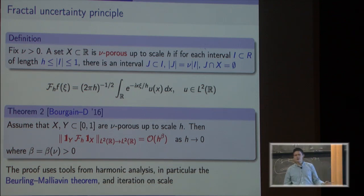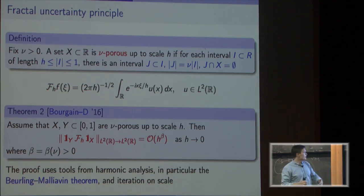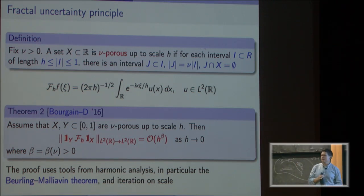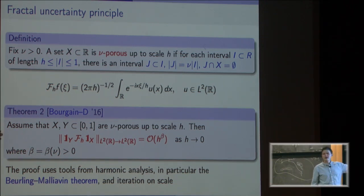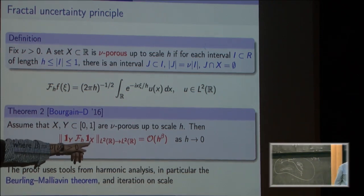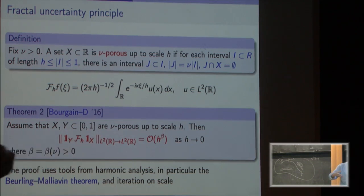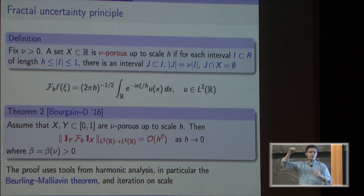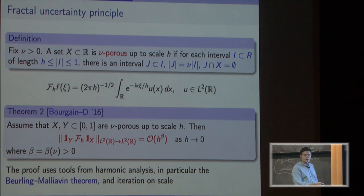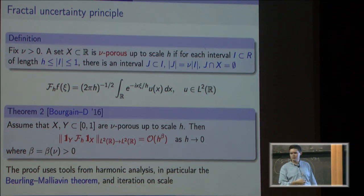That's the statement needed to prove the theorem. If you stare at it, there isn't much microlocal analysis and certainly not much quantum chaos. Indeed, the proof has nothing to do with what was discussed before — it's a harmonic analysis statement. It says: if the Fourier transform of a function has support in a porous set, then when you restrict to another porous set in position, you get something small. This is proved using classical harmonic analysis; in particular, the Beurling-Malliavin theorem is very useful.